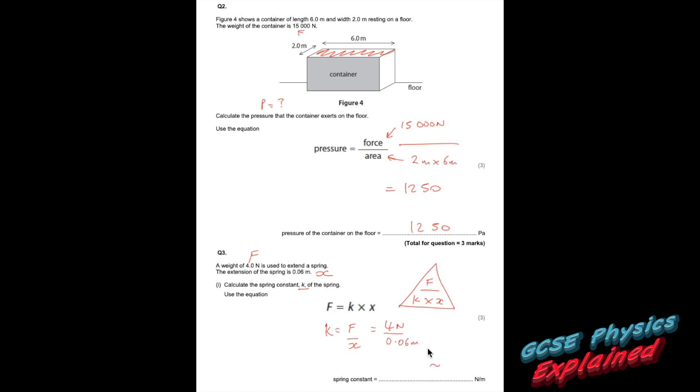Question 3. A weight of 4 newtons is used to extend a spring — that's a force. The extension of the spring is 0.06 metres. Always write down what you know. Calculate the spring constant k using the equation. Cover up k, what you're left with is f over x. That's 66.6 recurring newton metres.